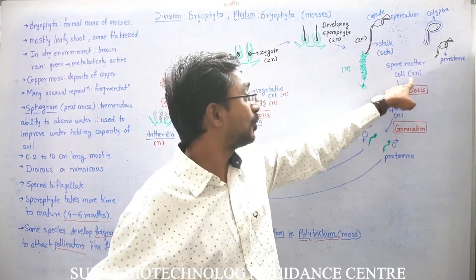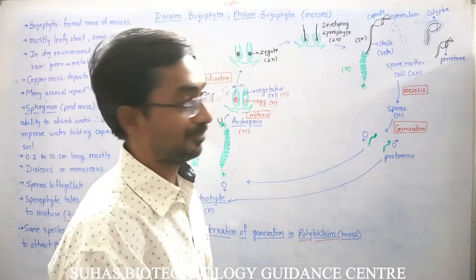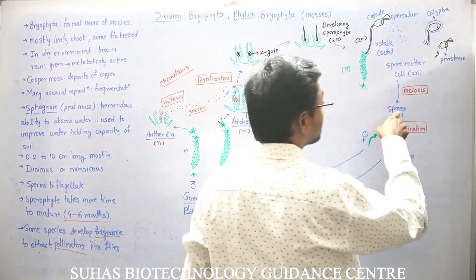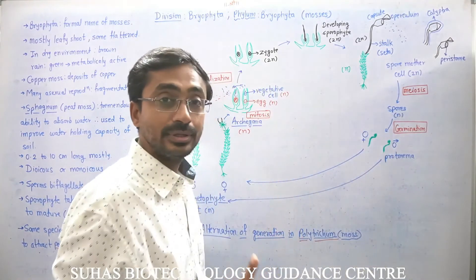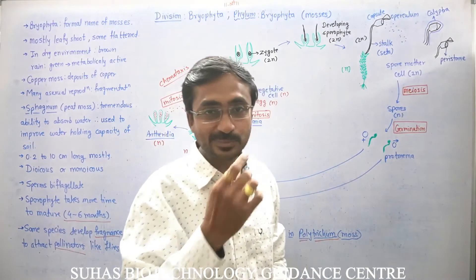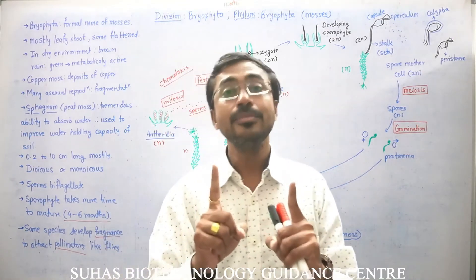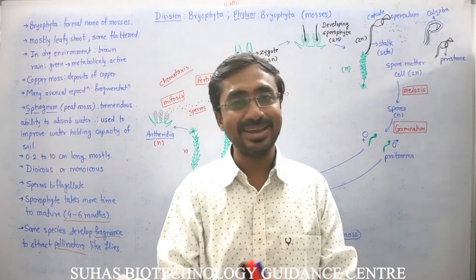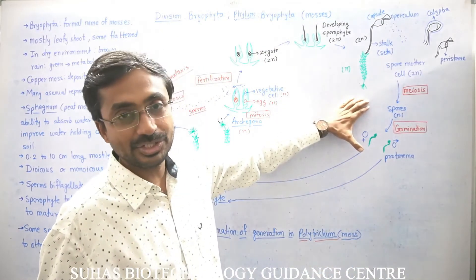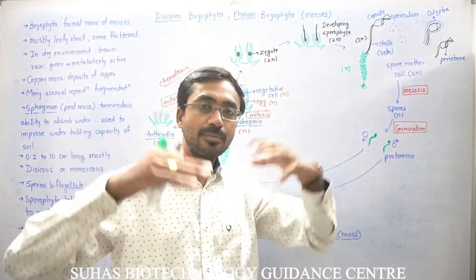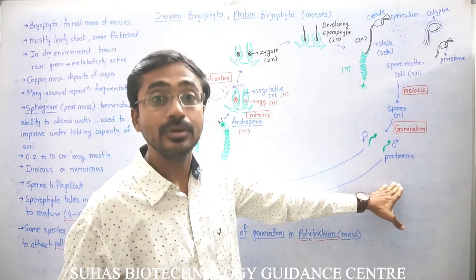The spore mother cell undergoes meiosis to form haploid spores. The spores will later germinate to form either a male or female plant — it depends on the environmental conditions. When there is fluctuation in the environment, a male plant or a female plant may be formed.